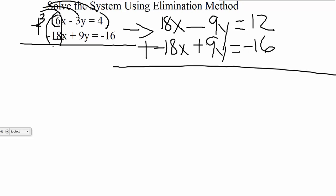So proceeding with that, we have 18 plus negative 18, which does cancel out. Then we have negative 9 plus positive 9, which also cancels out as well. So that means everything on the left-hand side canceled out, which means we have nothing left, which means we have 0. On the right-hand side, we have 12 plus negative 16, which is negative 4.